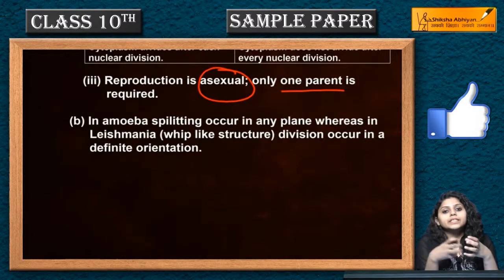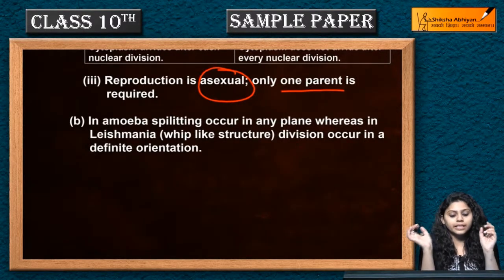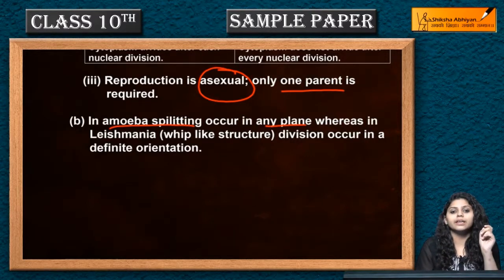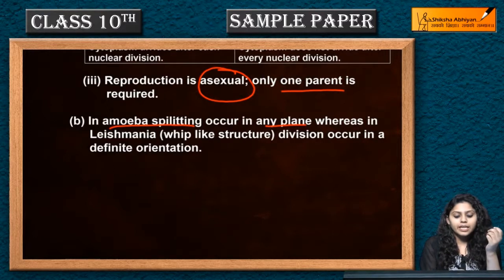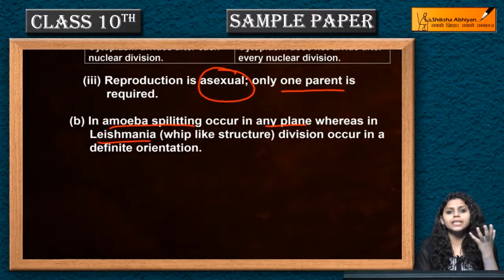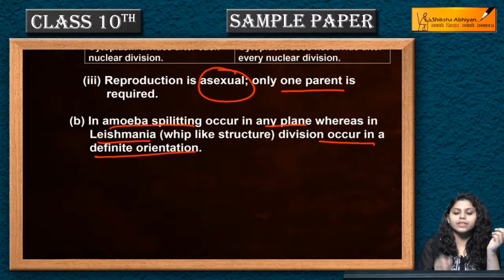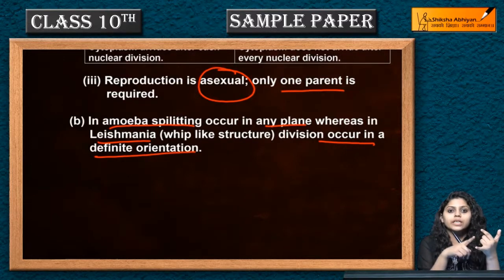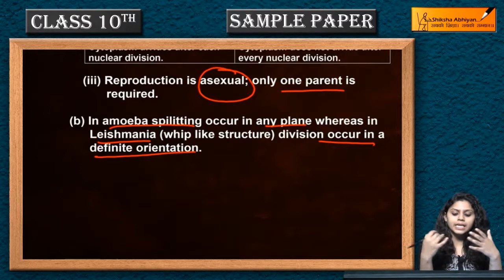The difference between amoeba and leishmania: in amoeba, the splitting occurs in one plane. Whereas leishmania has a whip-like structure and the division occurs in a definite orientation.